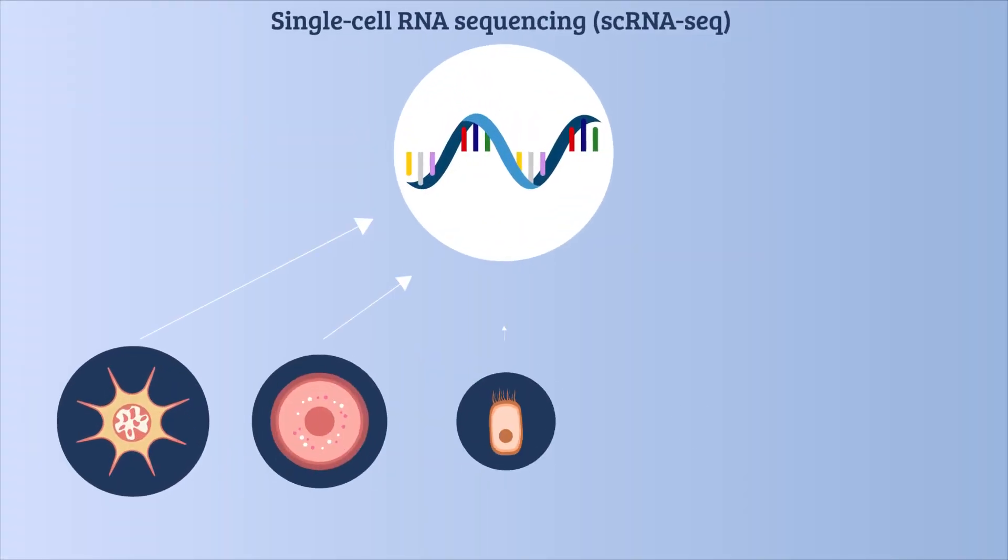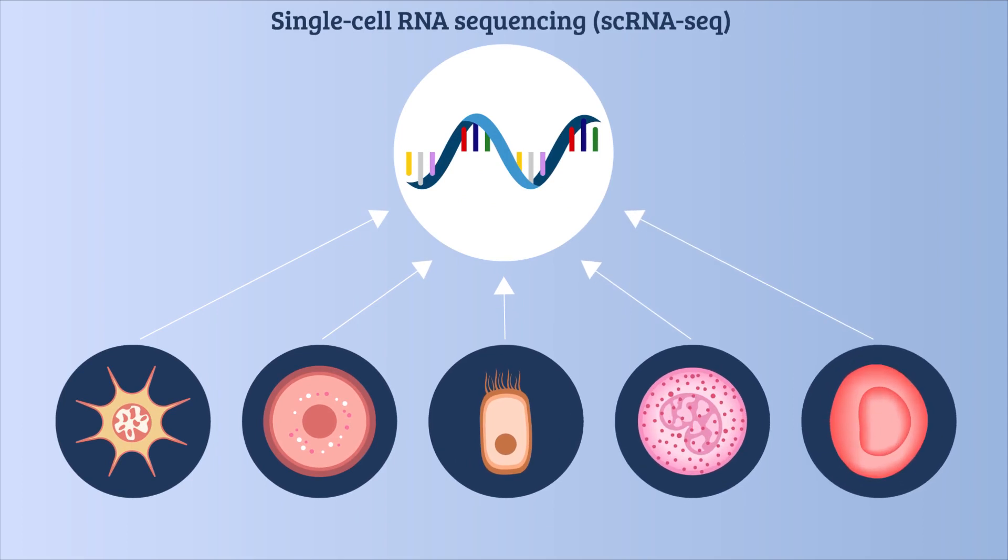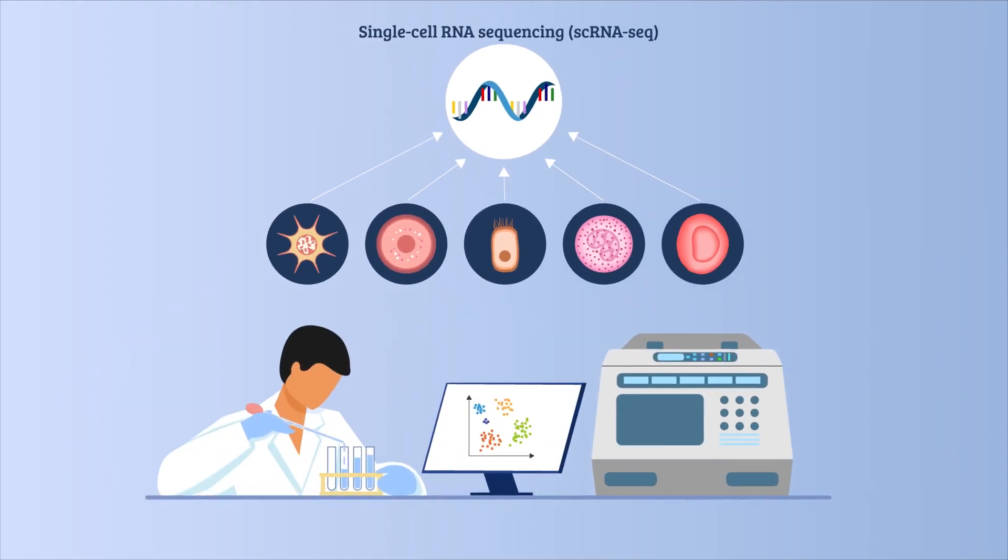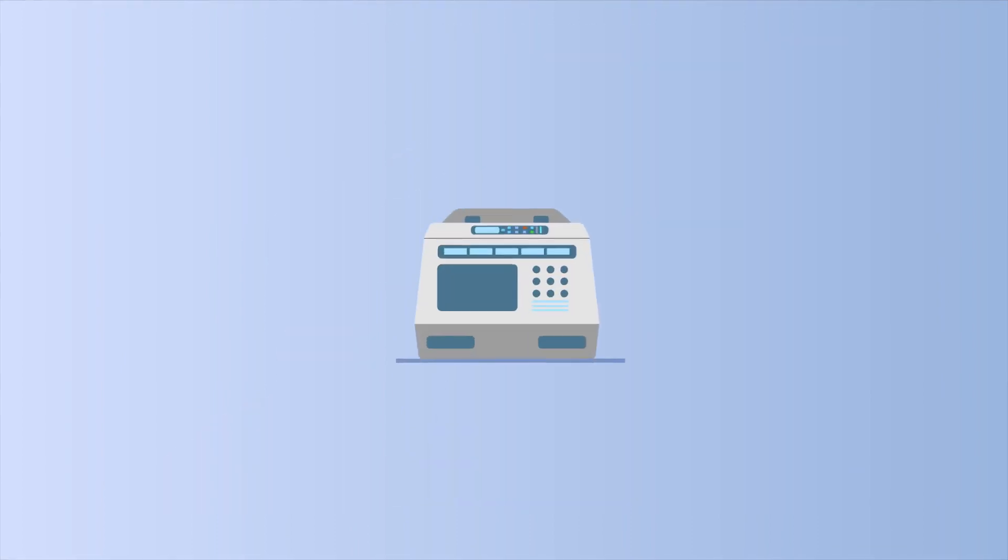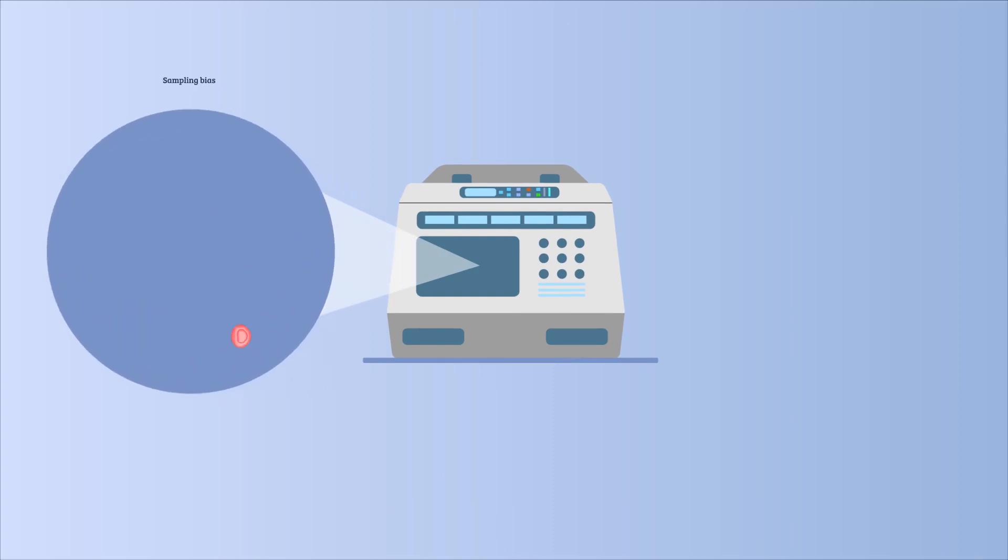Single-cell RNA sequencing, scRNA-seq, is a powerful tool used to gain insight into gene expression and cell-cell interactions. But current high-throughput scRNA-seq methods are plagued by sampling bias.